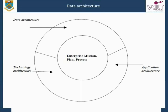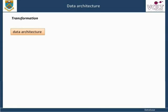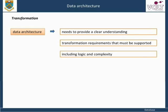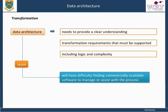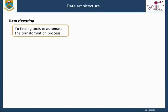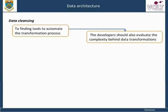A data warehouse is presented as a network of databases. The sub-components of the data architecture include the enterprise data warehouse, metadata repository, data marts, and multi-dimensional data stores. A data architecture needs to provide a clear understanding of transformation requirements that must be supported, including logic and complexity. In addition to finding tools to automate the transformation process, developers should also evaluate the complexity behind data transformations.